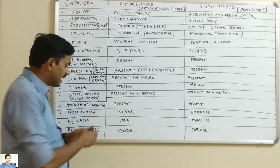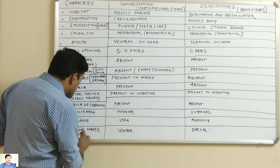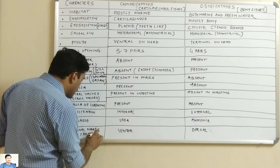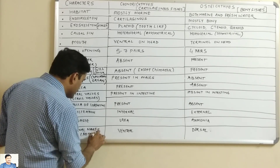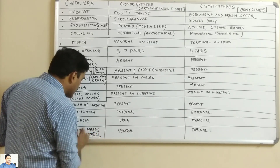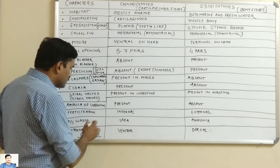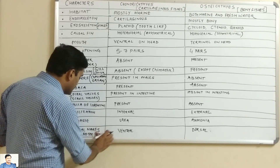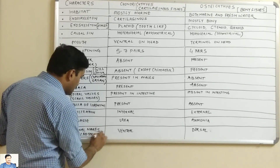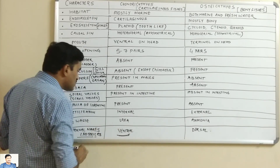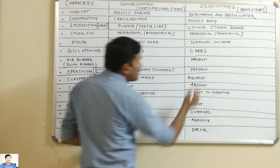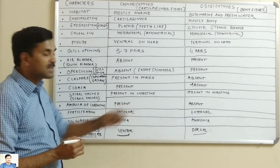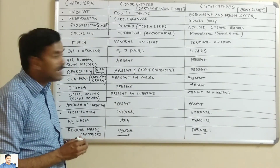Lastly, external nares — meaning external nostrils. In cartilaginous fishes, the nostrils are ventral in position, while in bony fishes the external nares or nostrils are dorsal in position. These were the differences between the cartilaginous fishes and the bony fishes.